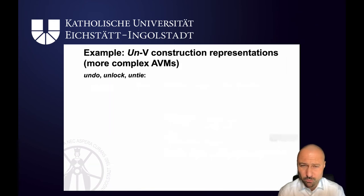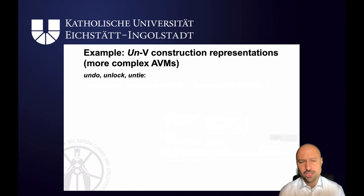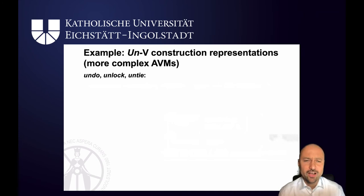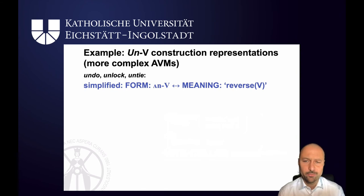This can become really complicated. Let's look at another construction: undo, unlock, untie — which looks similar to unhappy, unfriendly, unfaithful, but is of course a completely different construction. Because this doesn't mean 'not do', 'not lock', 'not tie' — no, it means something like 'reverse the action'. So reverse the doing, reverse the locking, reverse the tying. A simplified version of this is thus that we have 'un' followed by a verb slot, and the meaning is 'reverse this verbal action'.